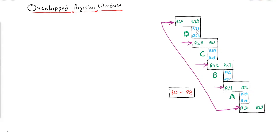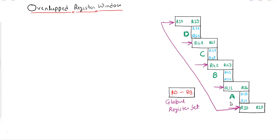So these are the local registers and these are the shared registers. Now, if process D wants to share data with A, B, and C, or if process B wants to share data with the rest, then the global register set will be used. The global register set is common between all processes or procedures. Whatever data process D wants to share with all other processes, D will put that data into these global registers and the rest of the processes will retrieve it from there.